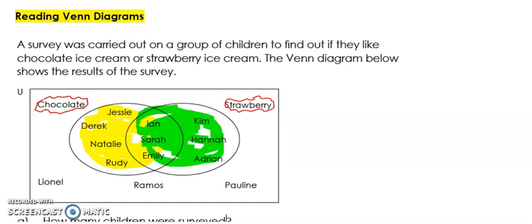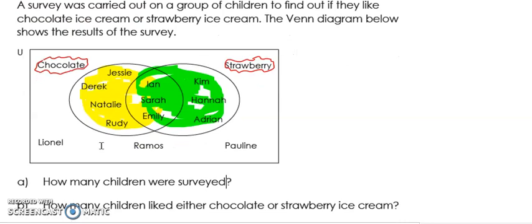And then we have some members of the universal set who are outside or not liking any strawberry or any chocolate. You see them out here. Okay, so now let us look at the questions that they're asking. How many children were surveyed? Now if we are to figure out how many children were surveyed, we have to count all the children in the Venn diagram.